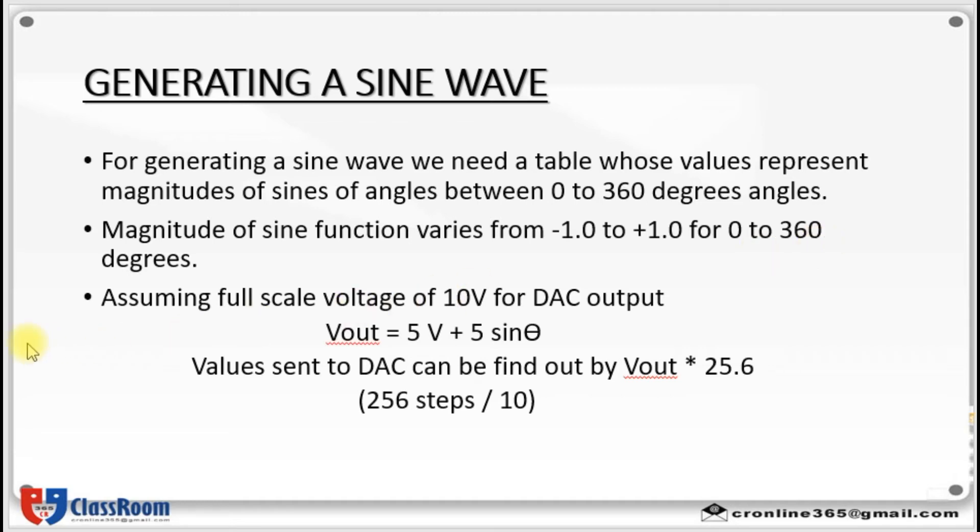Then to generate this table we assume full scale voltage of 10 volt for DAC output. Full scale output of the DAC is achieved when all the data inputs of the DAC are high. So in order to achieve this full scale 10 volt output we use this equation: Vout is equal to 5 volt plus 5 into sine theta. Value sent to DAC can be found out by Vout into 25.6. This 25.6 has came out from its resolution. DAC 0808 has 256 discrete voltage levels, that is 256 steps. That 256 steps by 10 will give you 25.6.